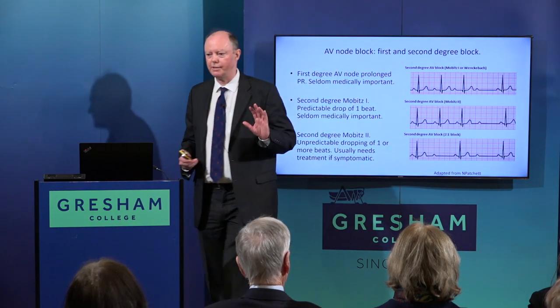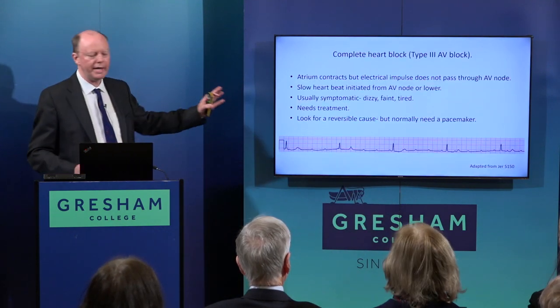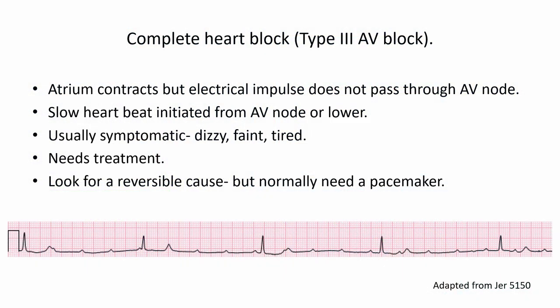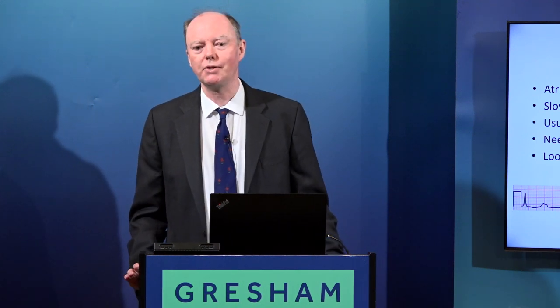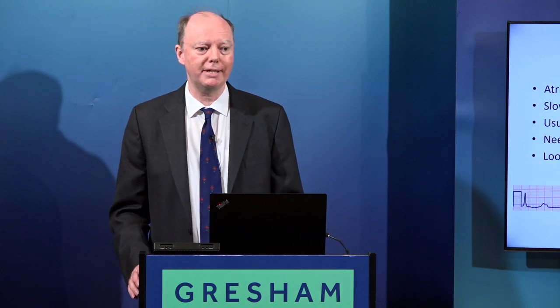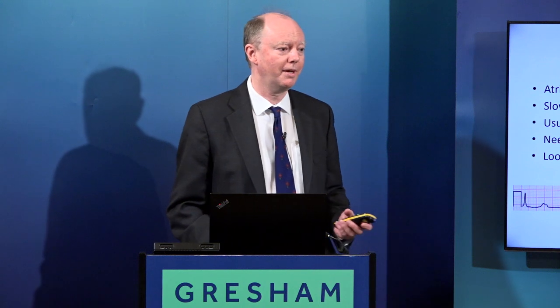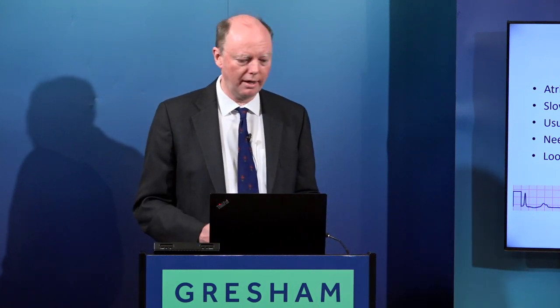Then there is complete heart block, also known as third-degree heart block. Here the P wave beats along perfectly normally — the atrium is contracting — but none of the impulse gets through the AV node at all. The ventricle takes over with one of the lower pacemakers, so you have the atrium going along at one rhythm and the ventricle going along at a different, much slower, unrelated rhythm. People usually have quite significant symptoms with complete heart block, and both second-degree and complete heart block, if symptomatic, are likely to need treatment — they can be debilitating and dangerous, for example when driving.